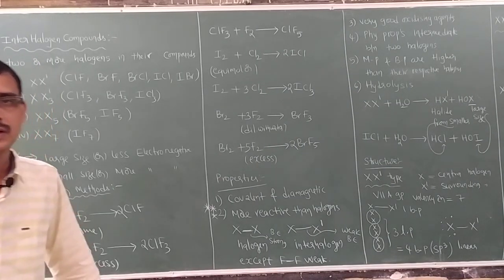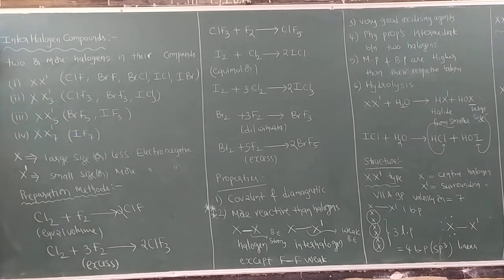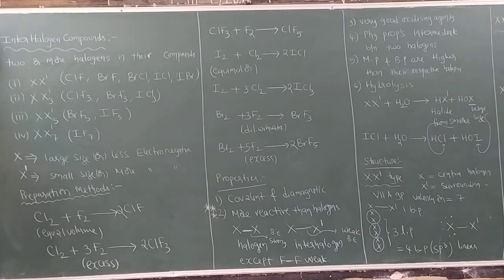Good morning children. Today we are going to start the last topic of the halogen compounds — that is interhalogen compounds. The definition: any compound which is formed by two or more halogens, the molecule is formed by two or more halogens, they are called interhalogen compounds.